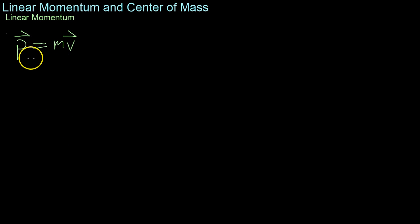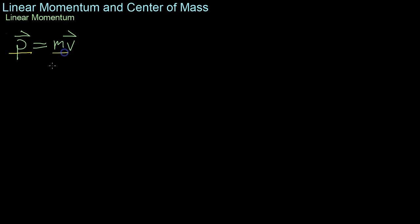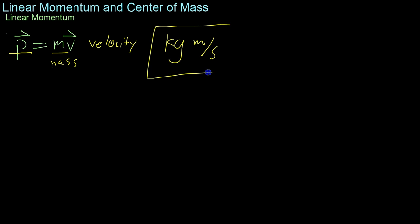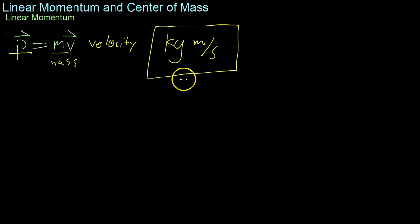We'll start off with the definition of linear momentum. Momentum, which is usually shown by P, is basically the product of the mass and the velocity vector. Because it's a mass times a velocity, we multiply the SI unit for mass times the derived unit for velocity. So momentum is measured in kilogram meters per second in the SI standard of units.